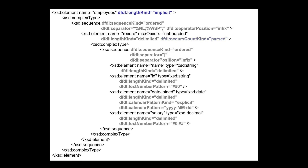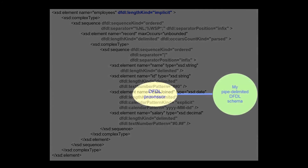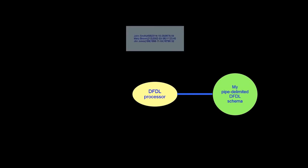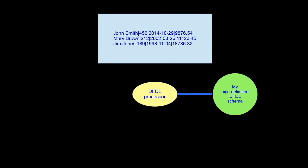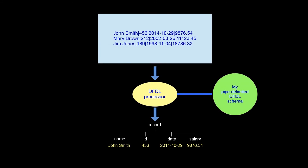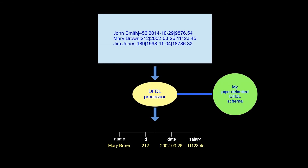And finally, we specify the length of the overall employees structure as implicit. So now we are able to parse a file of delimited entries and create individual records for each entry in the form required by the program that processes the records.